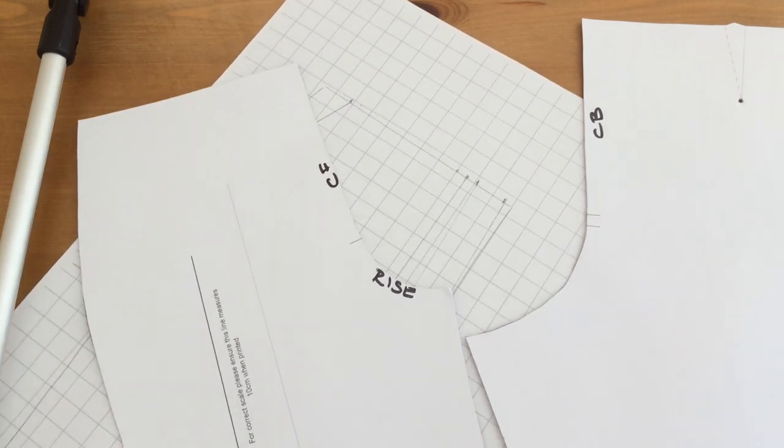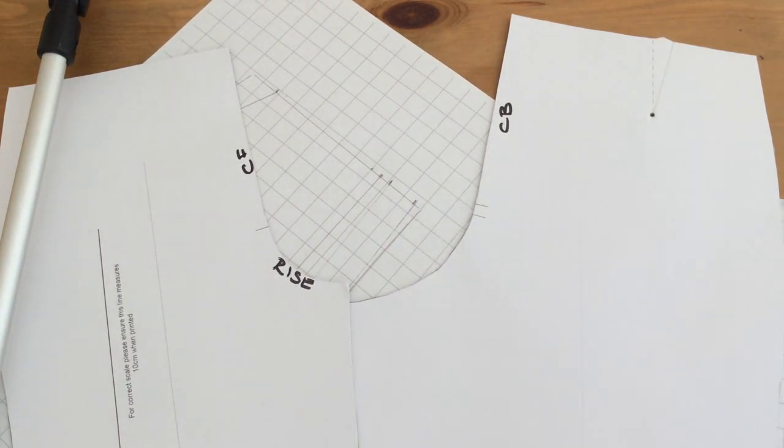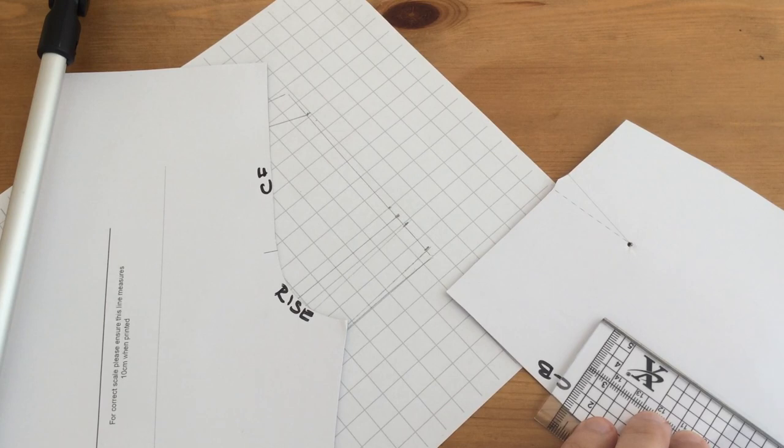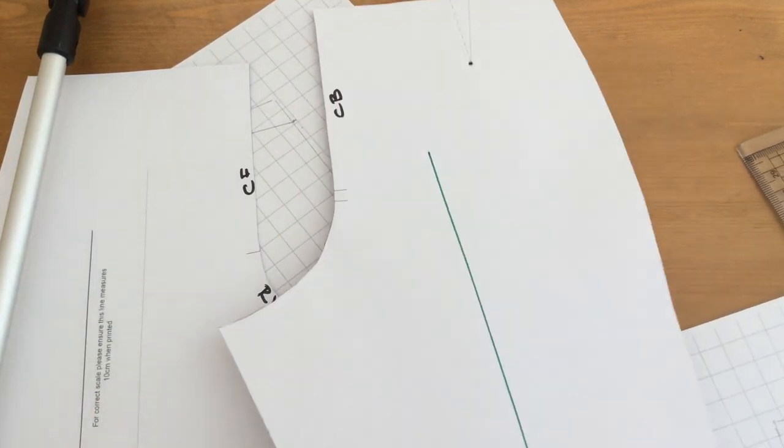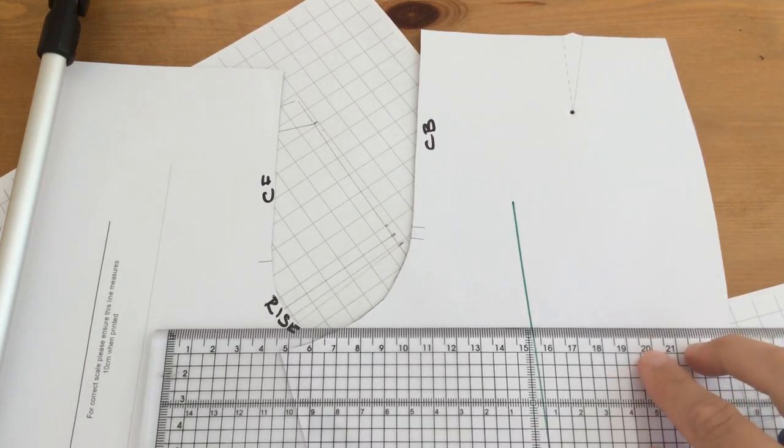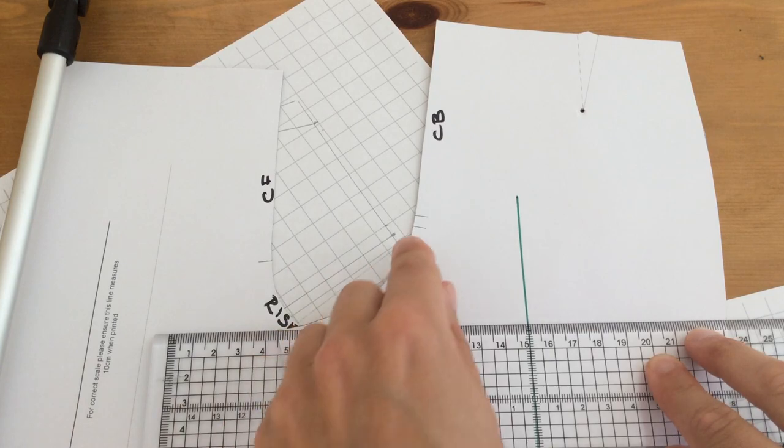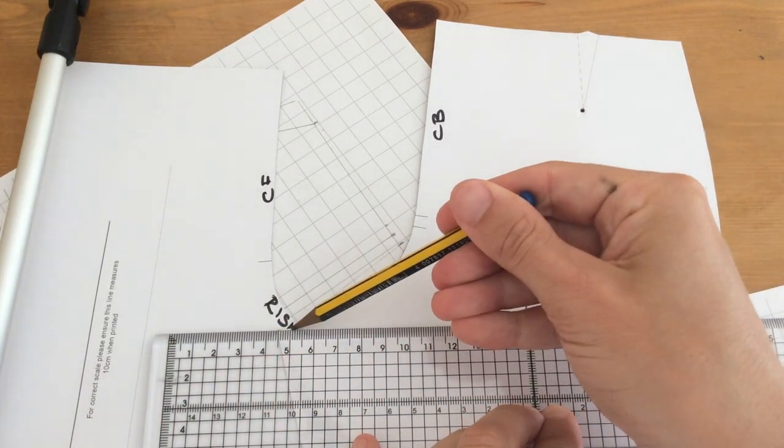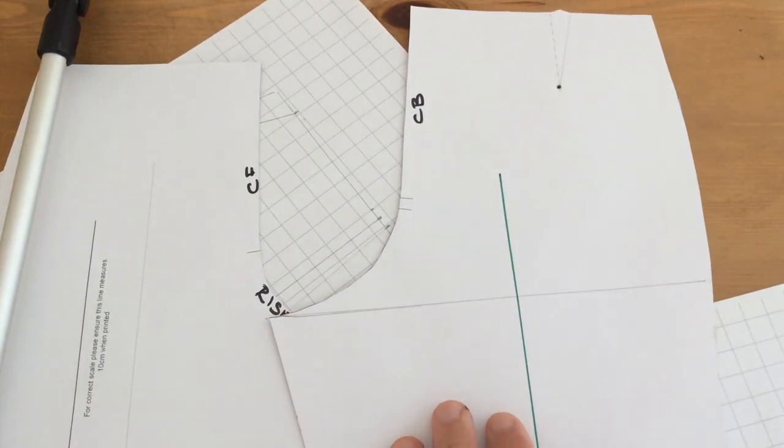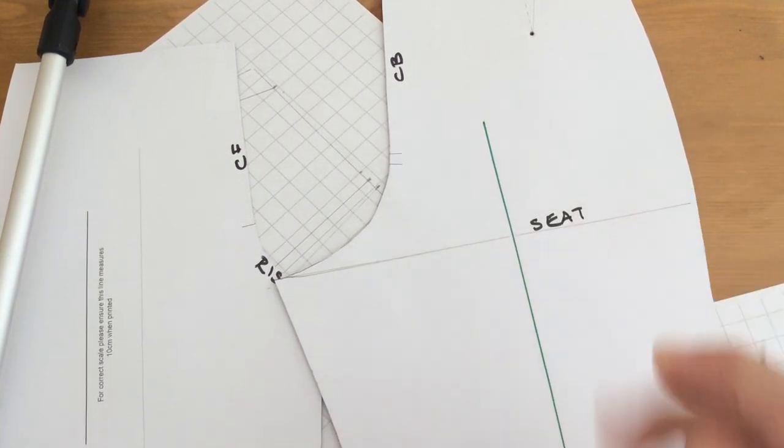Now one thing we haven't got on here yet—there's a very faint grain line, let's draw that in so we can see a bit clearer. If we place the ruler at 90 degrees onto the grain line and match it where the rise finishes there and rule across, this is often referred to as the seat, the seat line.